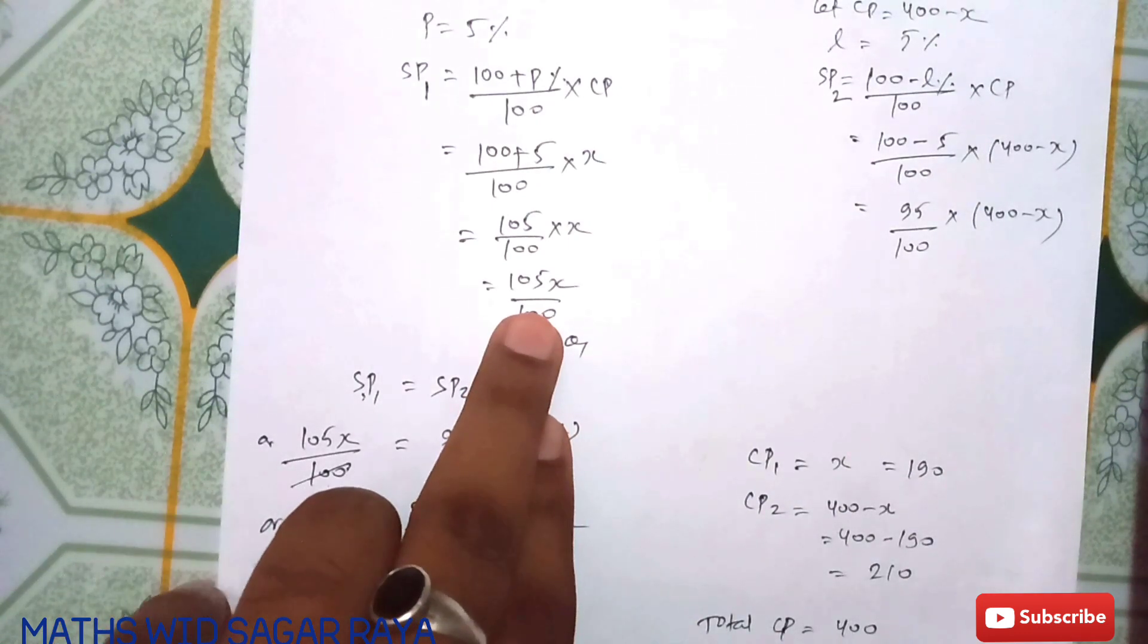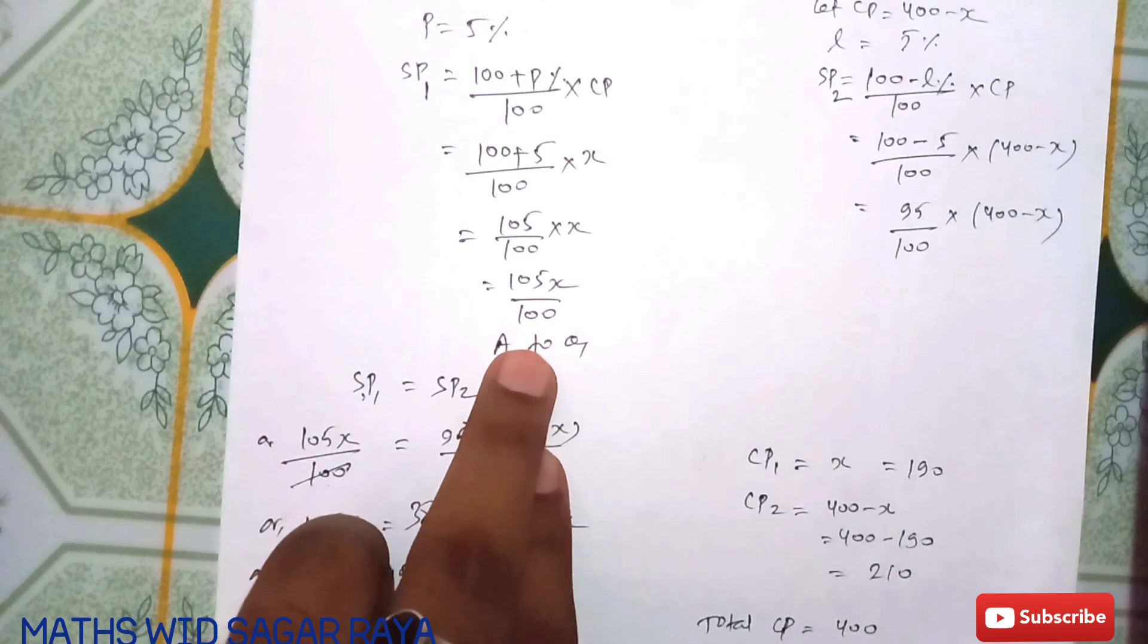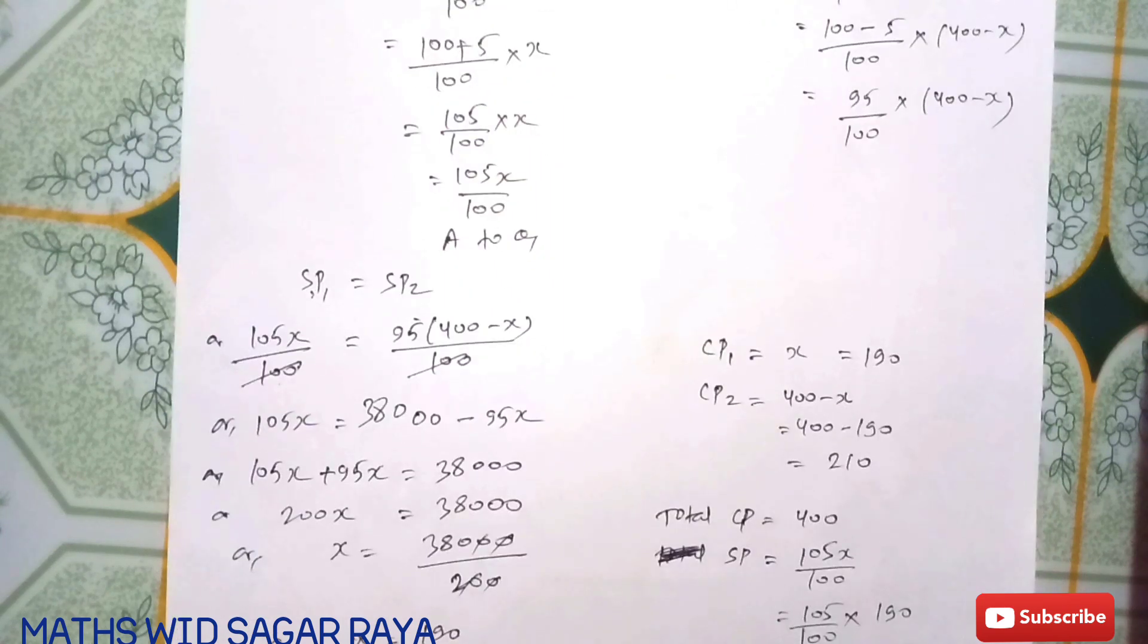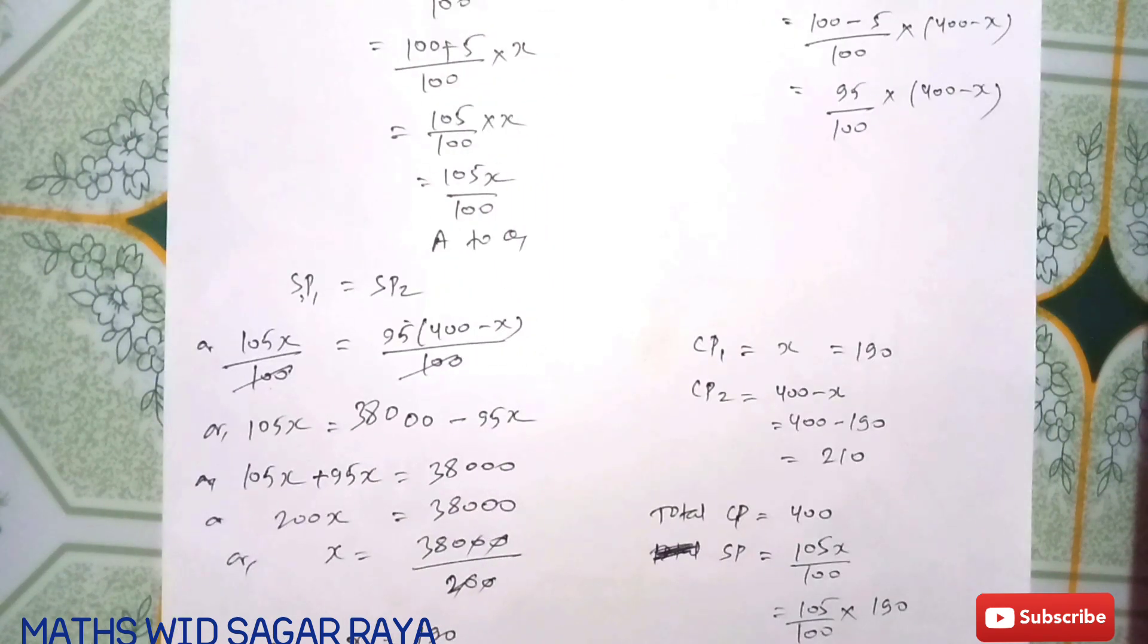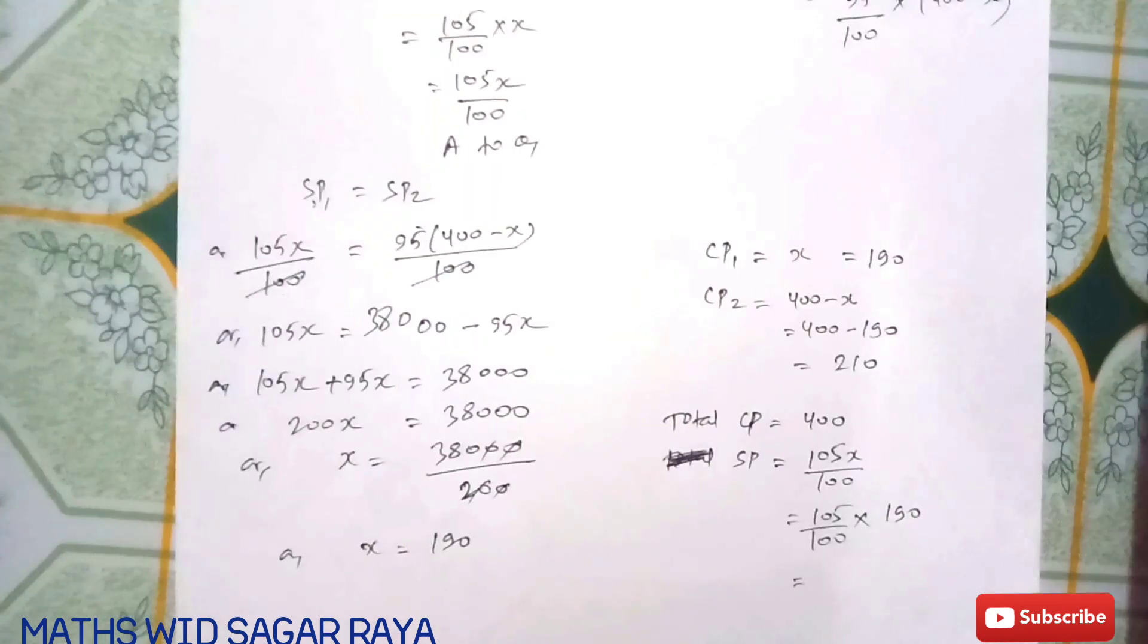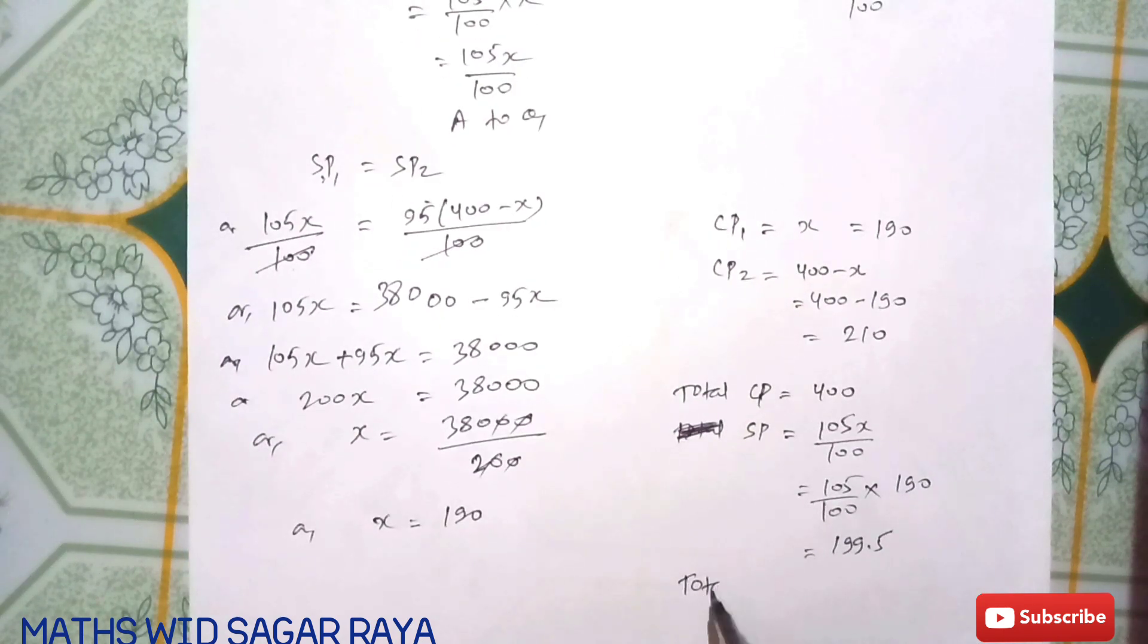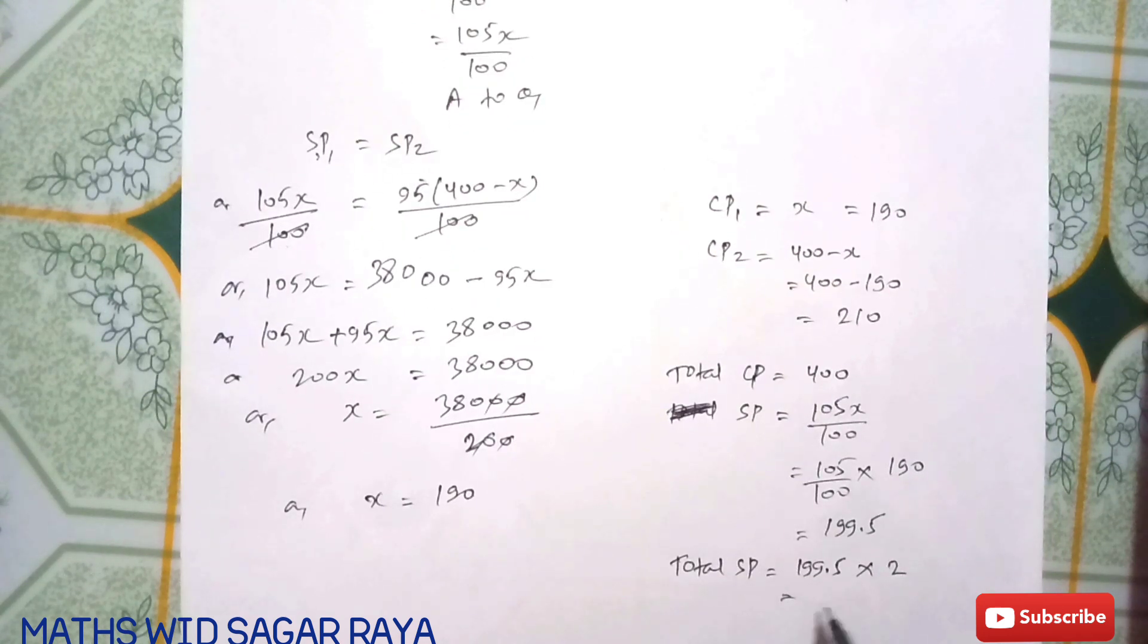First find SP. SP = 105X / 100 = 105 × 190 / 100 = 199.5. Since the selling price is the same for both watches, total SP = 199.5 × 2 = 399.